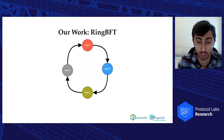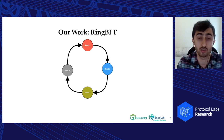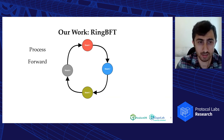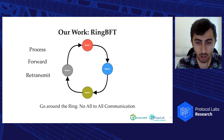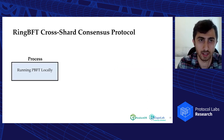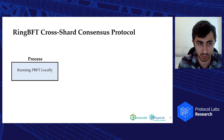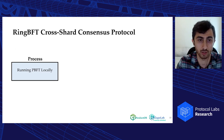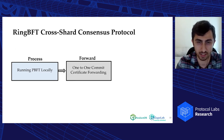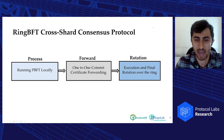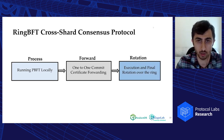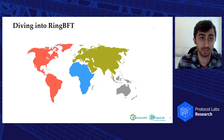Our protocol, Ring BFT, is a topology-aware sharding consensus protocol which relies on three simple steps: process, forward, and retransmit — going through all involved shards around the ring without any all-to-all communication. The first phase, process, runs an instance of PBFT locally to order the cross-shard transaction in the first shard in the ring. The next step, forward, forwards the results of PBFT from the previous shard to the next shard going around the ring, executing the cross-shard transaction in each subsequent shard.